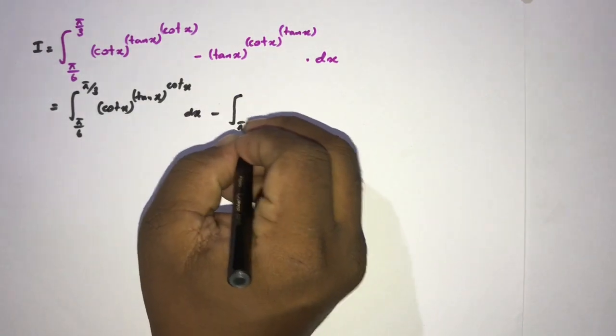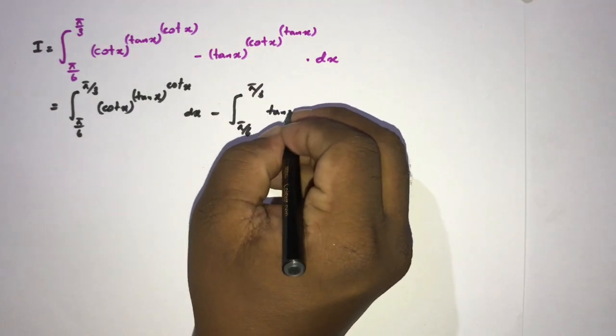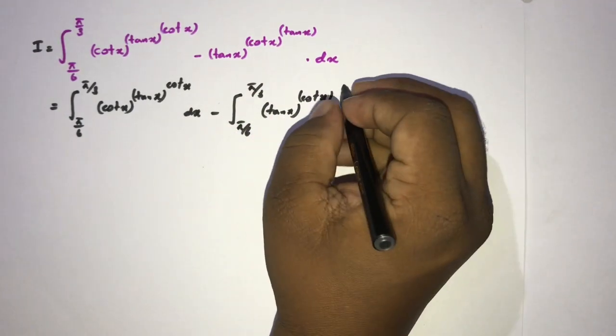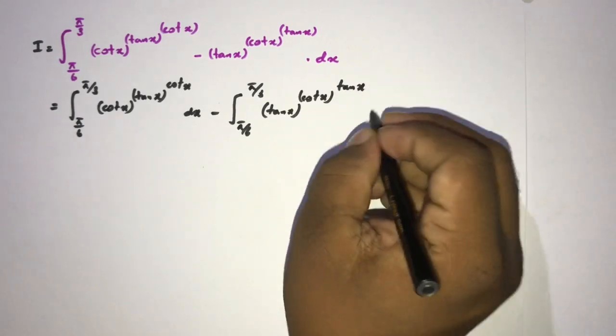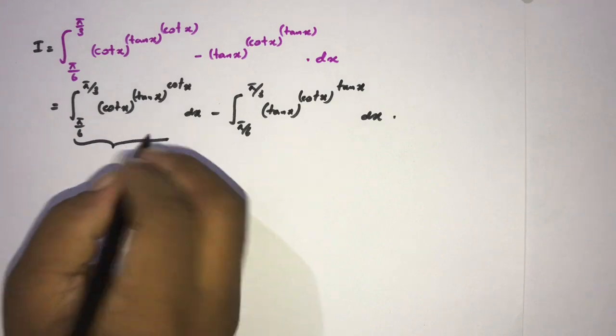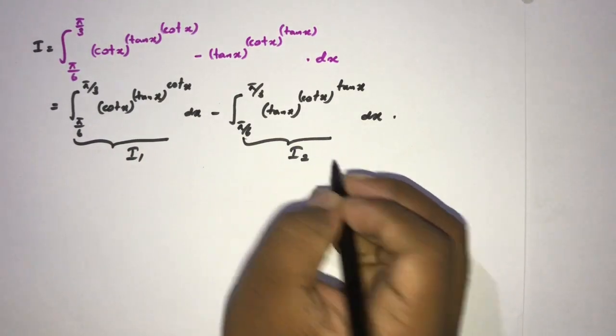pi over 6 to pi over 3, tan of x raised to the cotangent of x raised to the tan of x dx. Okay, then I am going to take this integral I1 and this integral I2.